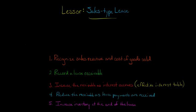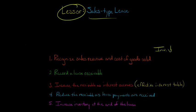If we're debiting cost of goods sold, that means we're going to be crediting inventory, so inventory is going to decrease. That means the lessor is effectively getting the item that is being leased off of its books, and it's going to recognize revenue as well.